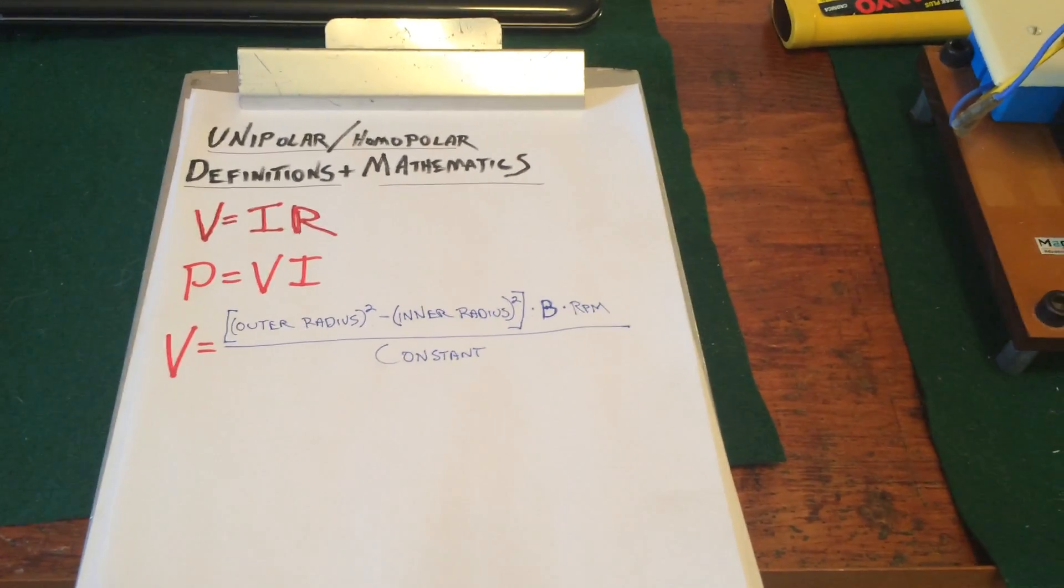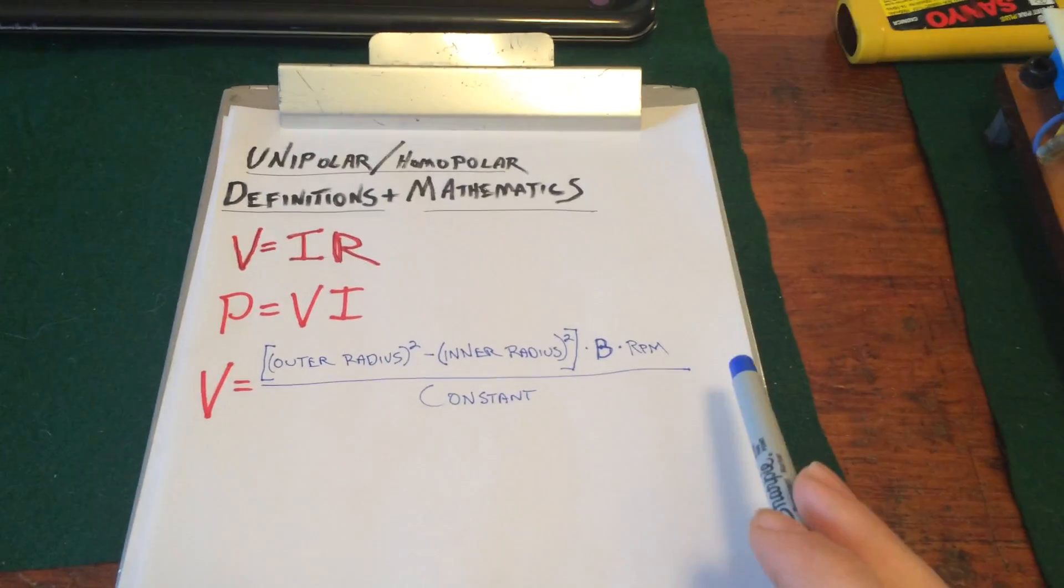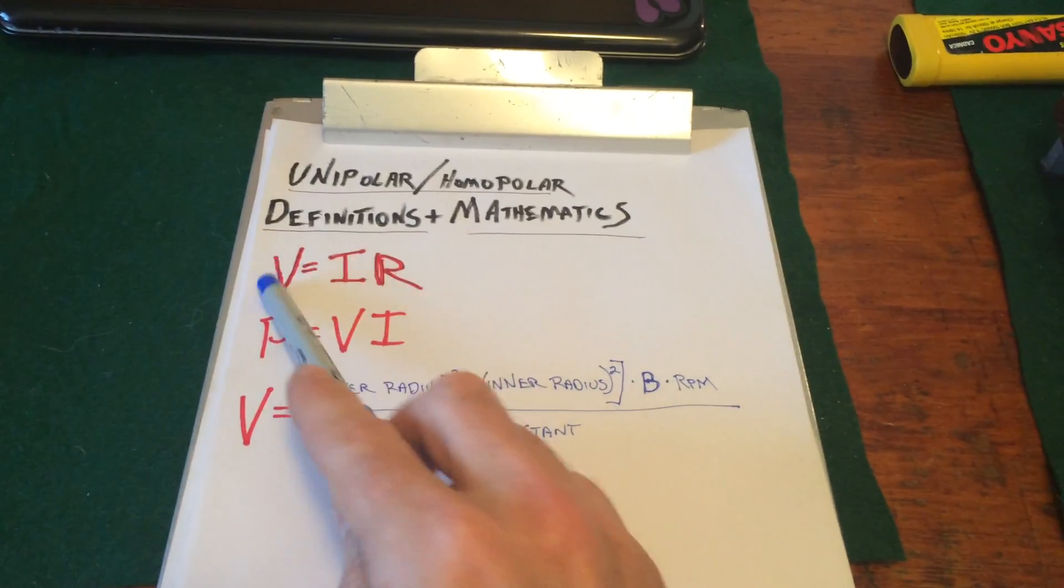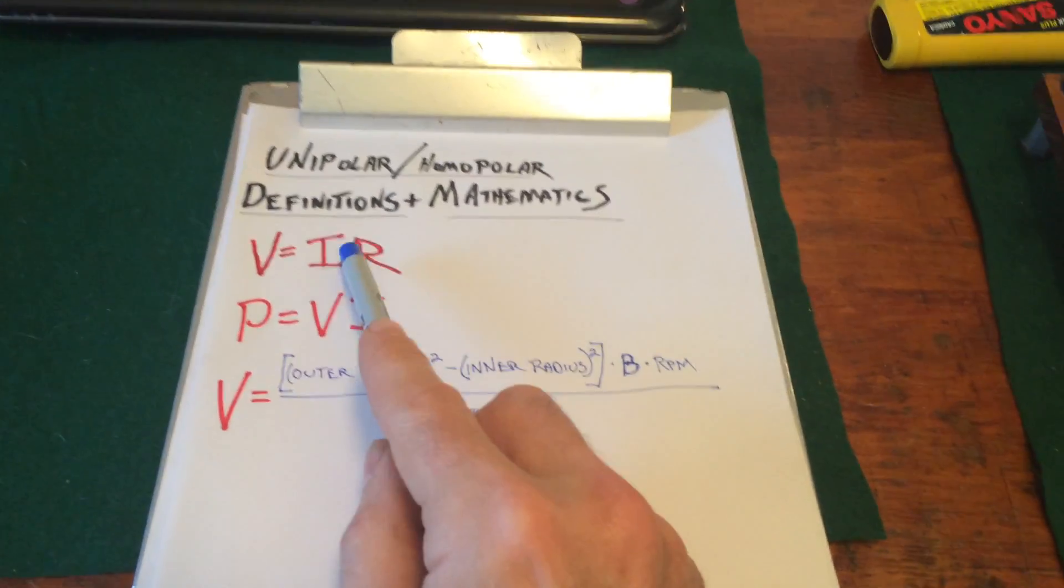Okay, so we've got our voltage calculation, but what about the current? Well, we've got a circuit, V equals IR, and the resistance, although it's really low, it doesn't change.